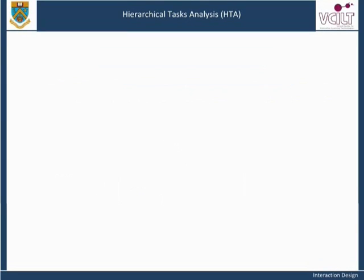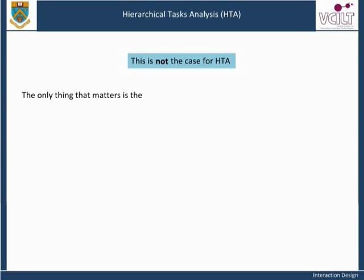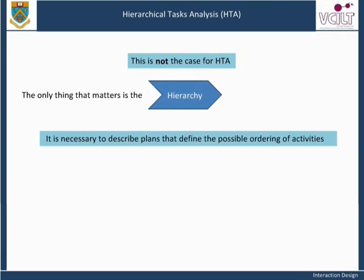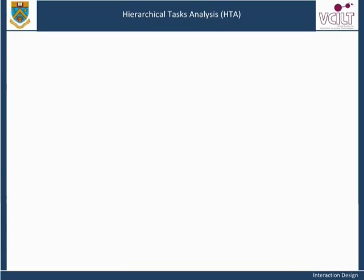There may be some other notations you are familiar with where the order of appearance of boxes in the tree indicates ordering, probably left to right. This is not the case for HTA — the only thing that matters is the hierarchy. As well as presenting the hierarchy, it is necessary to describe plans that define the possible ordering of activities. Although tree structures are visually appealing — well, more appealing than the alternatives anyway — they can be tedious to draw without a suitable tool. Therefore, an alternative text-based notation that relies on indentation is often used.